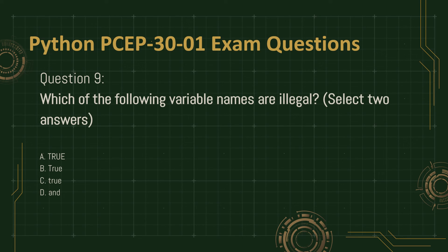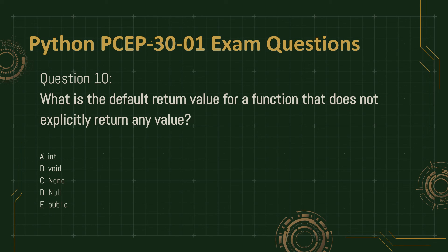Question 9. Which of the following variable names are illegal? Select two answers. A. True. B. True. C. True. D. And.